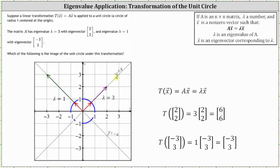Therefore, the unit circle would be stretched by a factor of three along the line y equals x under this transformation. However, because the vector (-3, 3) has an eigenvalue of one, it does not change under this transformation. Therefore the unit circle is not stretched along the line y equals negative x, which is where we find all the scalar multiples of the vector (-3, 3). So we are looking for a unit circle that has been stretched by a factor of three along y equals x and not stretched along y equals negative x.